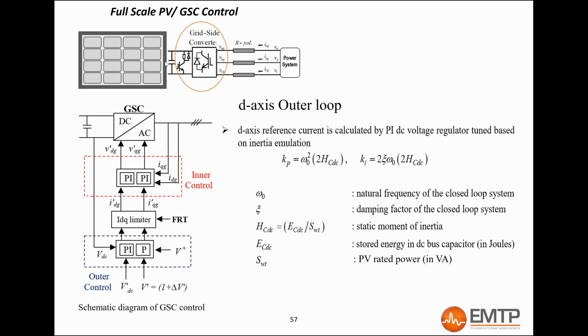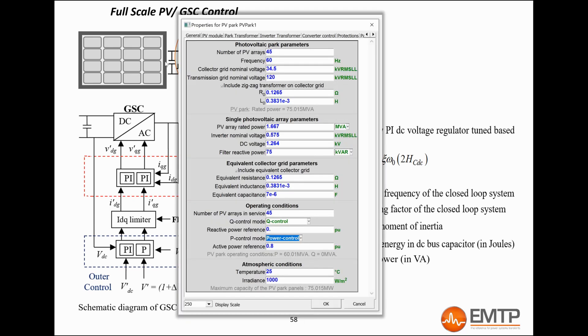The second is to follow another active power reference, assumed to be lower than the maximum active power available. In this case, according to the power versus voltage curve of the PV cells, a DC bus voltage reference is determined. More information will be available in another video.